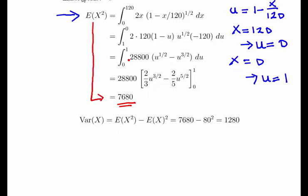We calculate the variance now. You should be fairly familiar with this expression: E(X^2) - [E(X)]^2 = 7,680 - 80^2 = 7,680 - 6,400 = 1,280. That's the answer.